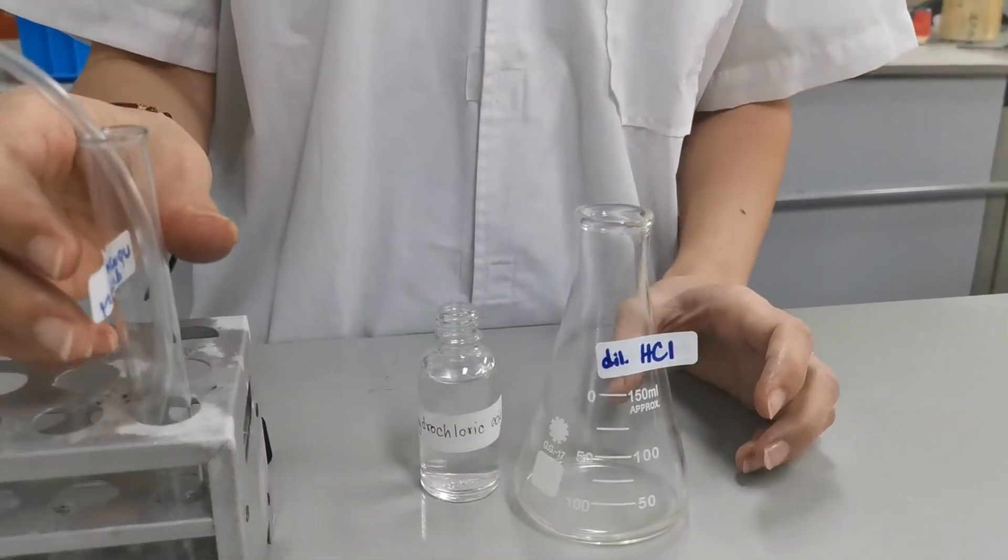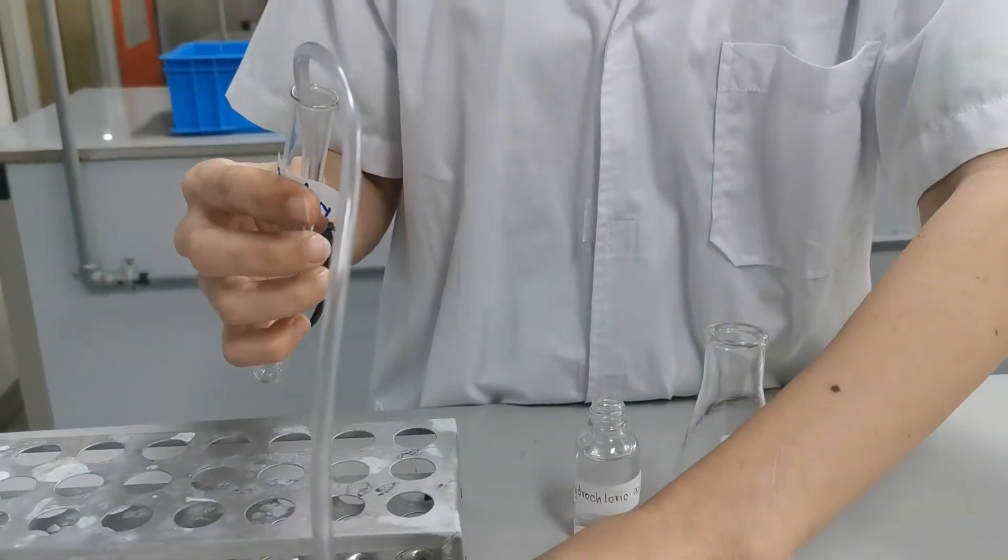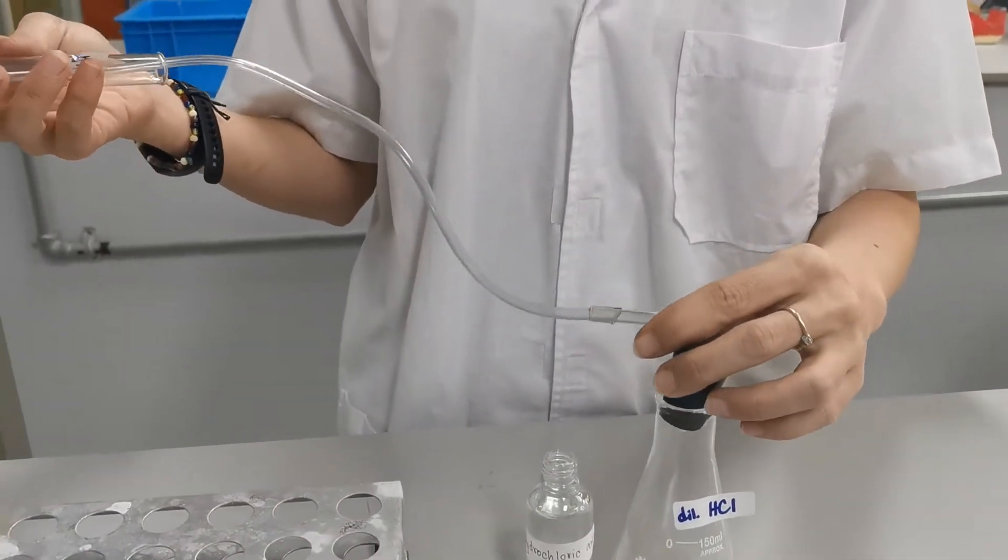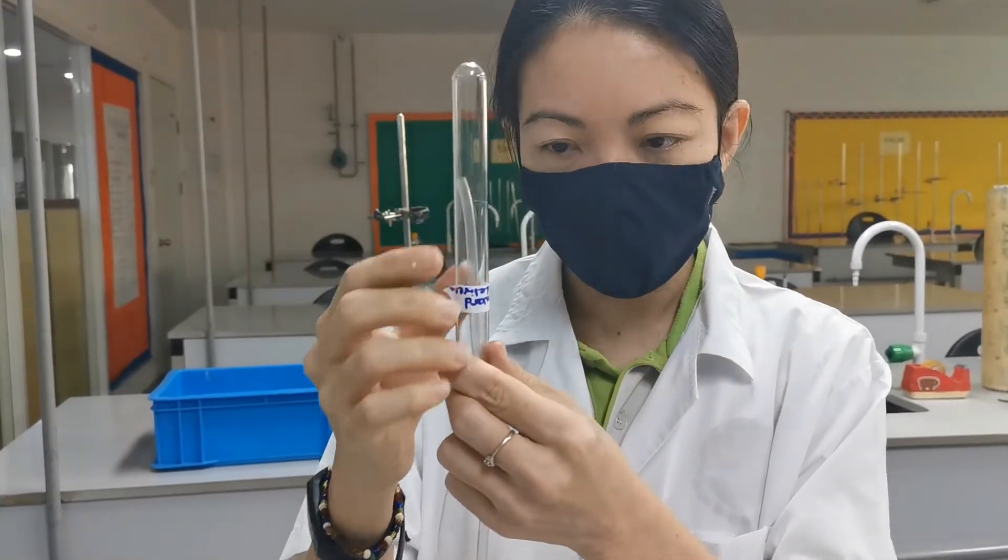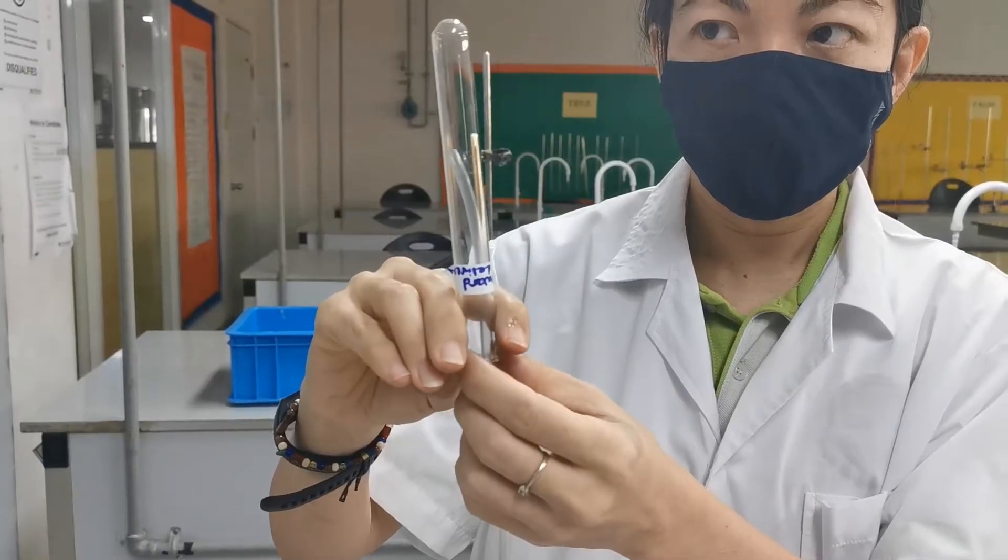If it's going to float in air, the best way to collect hydrogen gas is by upward delivery. This way the hydrogen will go up and collect in this test tube.